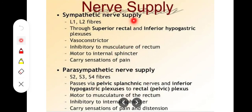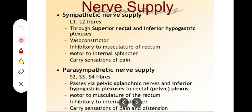Now we have to talk about the nerves of the rectum. There are sympathetic and parasympathetic components. The sympathetic nerves come from the ventral rami of L1 and L2. The parasympathetic nerves come from the ventral rami of S2, S3, and S4. These pass through the inferior hypogastric plexus and the inferior mesenteric plexus.